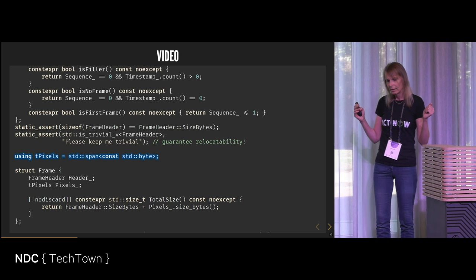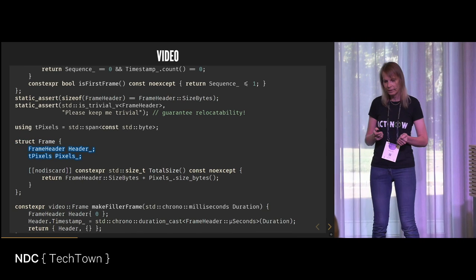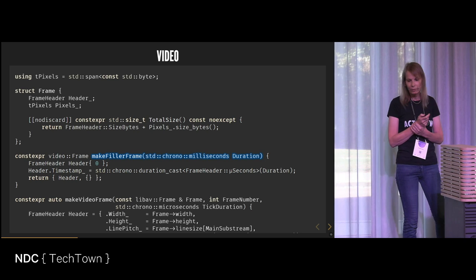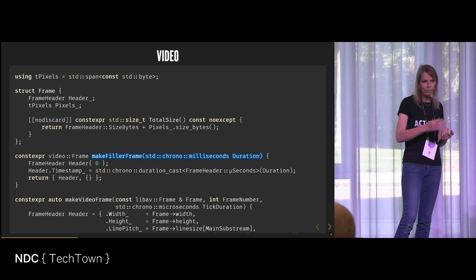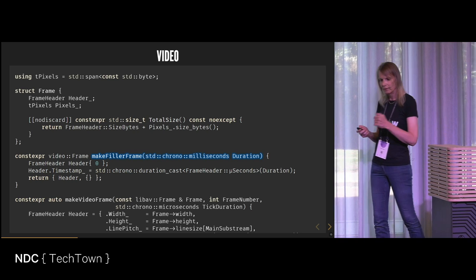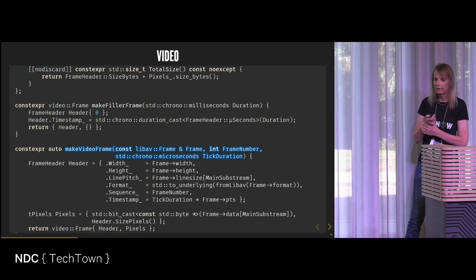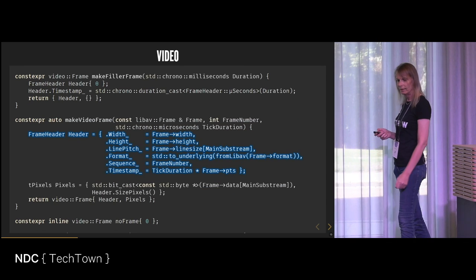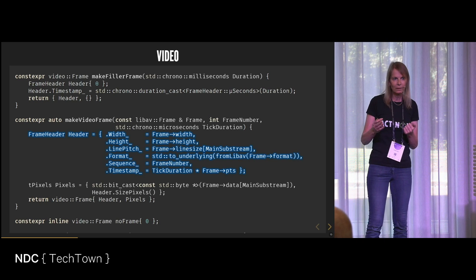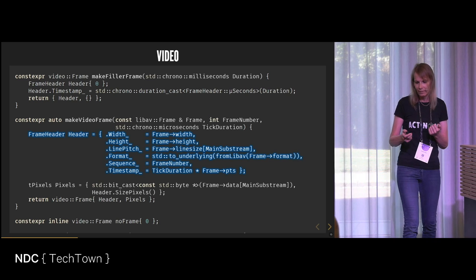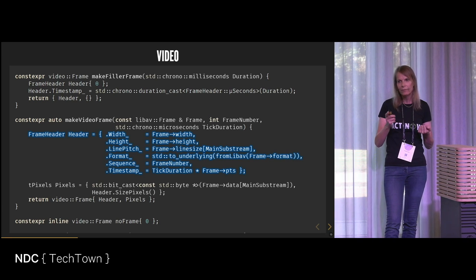There's a type that designates a bunch of video pixels, implemented as a span of bytes — both the header and the pixels make up a complete video frame. There's a constructor required to send filler frames because if you don't have anything to show you should still send something over the network, specifying how much time a filler frame designates. And there is a full constructor from a decoded video frame with metadata — and this is where we can use designated initializers of aggregates to make it absolutely clear what we intend when filling in the header parts.